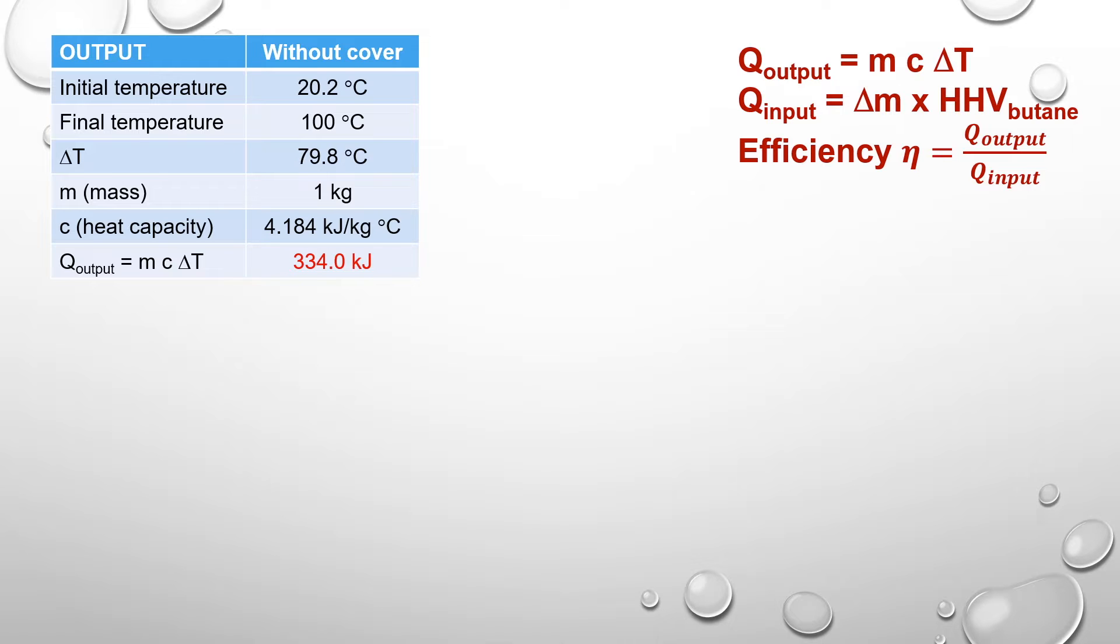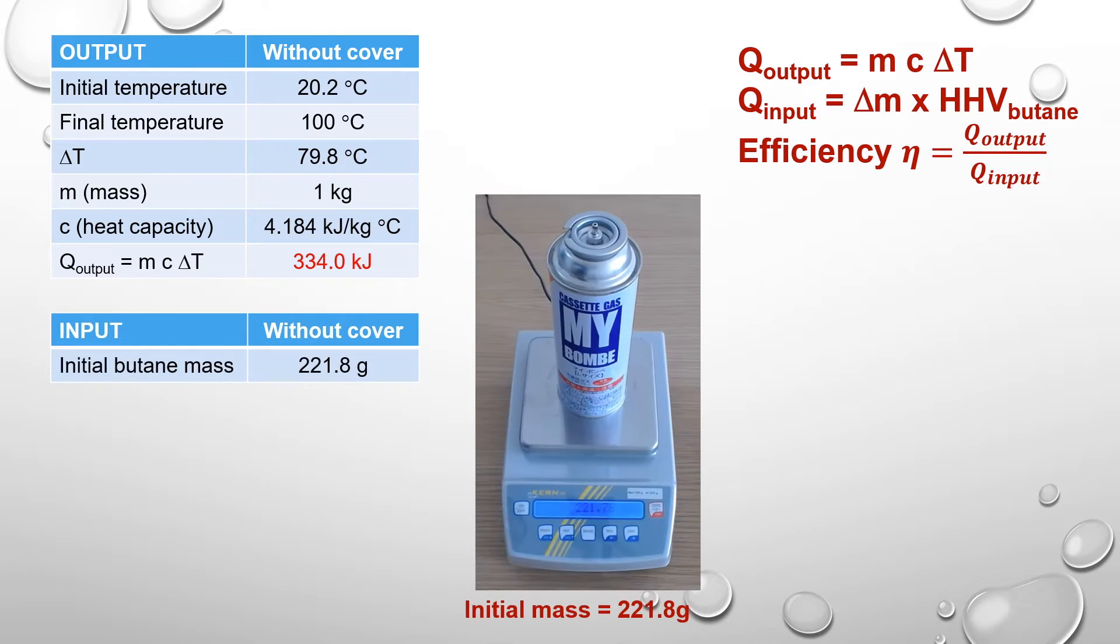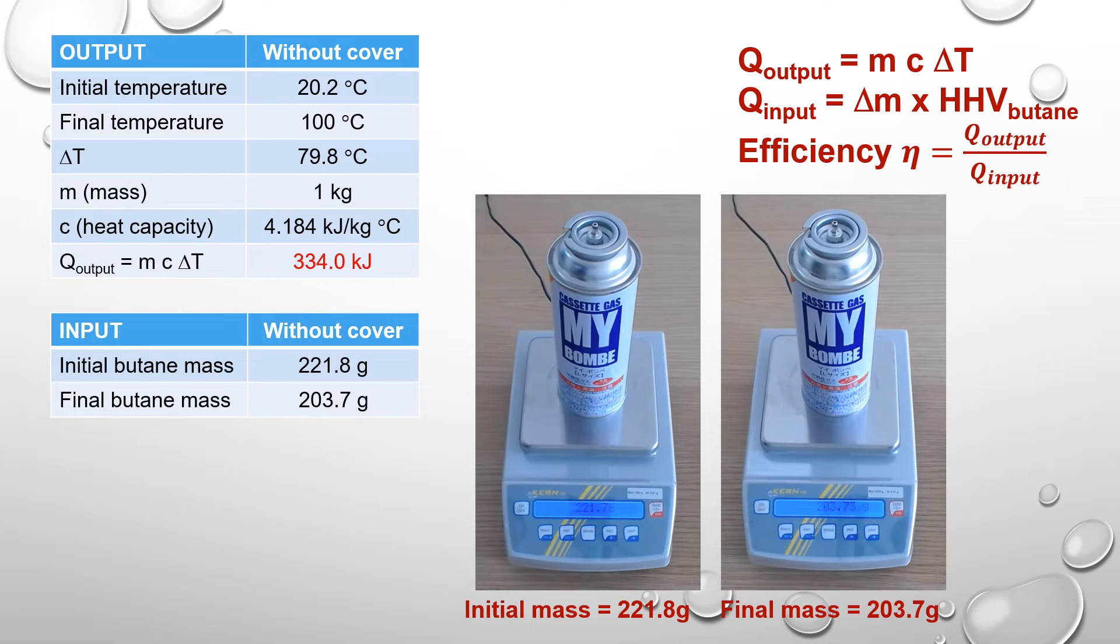To find out how much energy is used, we also measured the initial mass and the final mass of the gas cylinder. The weight drop is 18.1 g. As the cylinder contains liquid butane, we can take the higher heating value of liquid butane, which is 49,130 kJ per kg, from a textbook to estimate the energy input. The energy input is therefore about 886.8 kJ.